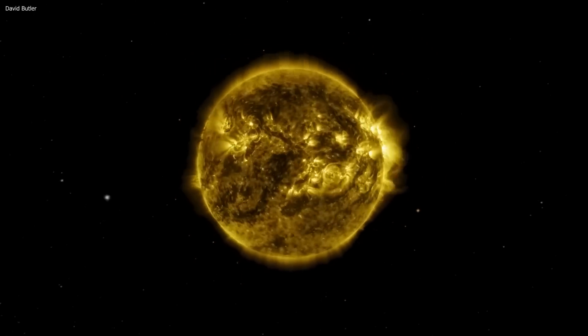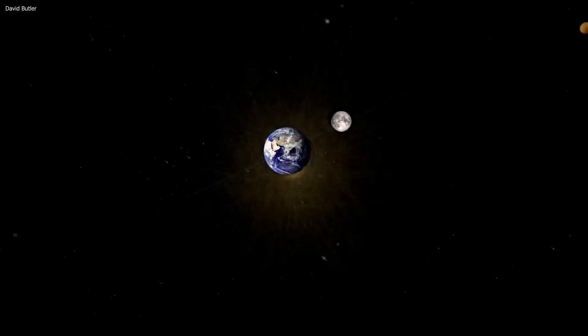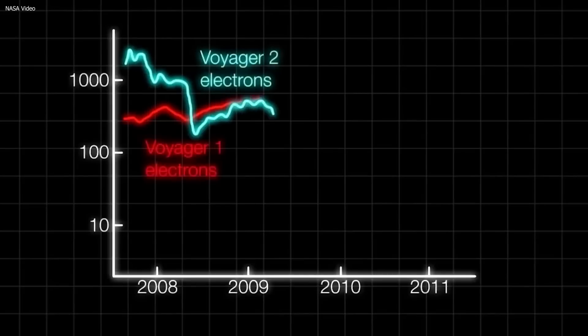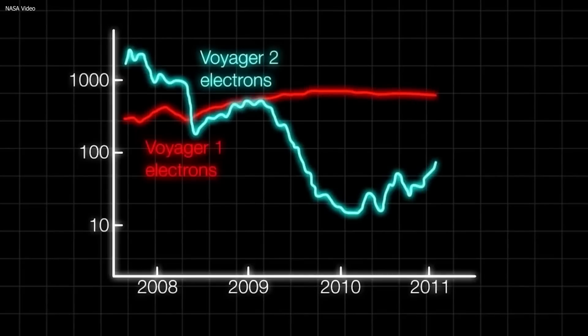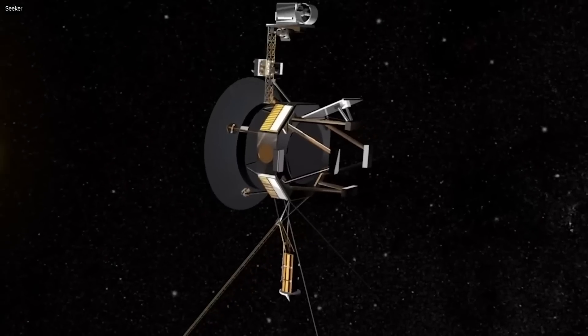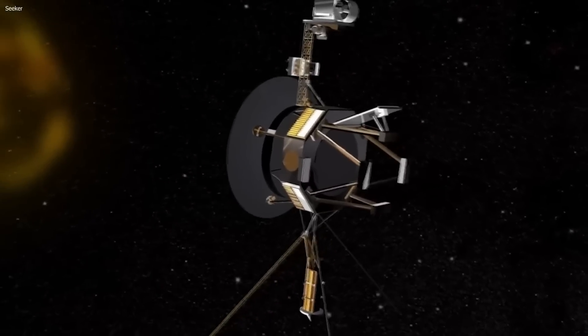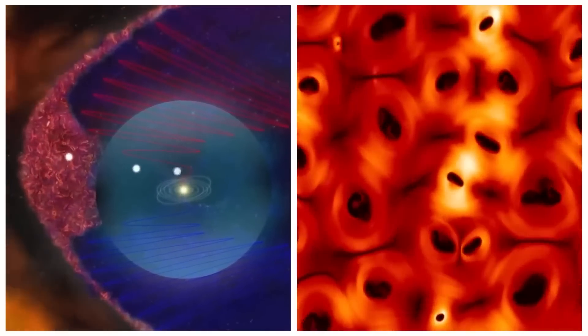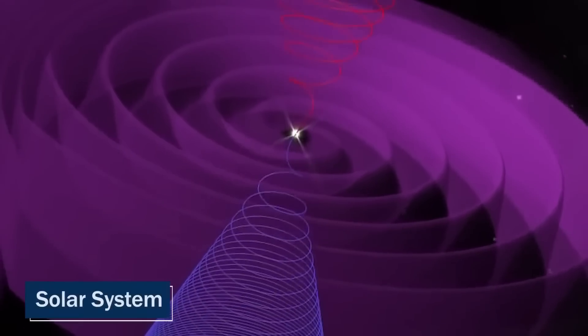As scientists continue to study the heliopause, they have made alarming observations of recent changes that defy explanation by current models. But first, what is the heliopause? The heliopause is the boundary between the heliosphere and the interstellar medium. The heliosphere is a vast bubble of plasma or charged particles created by the sun's solar wind that envelops our solar system.